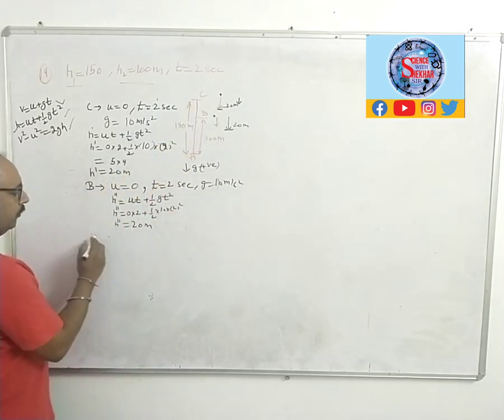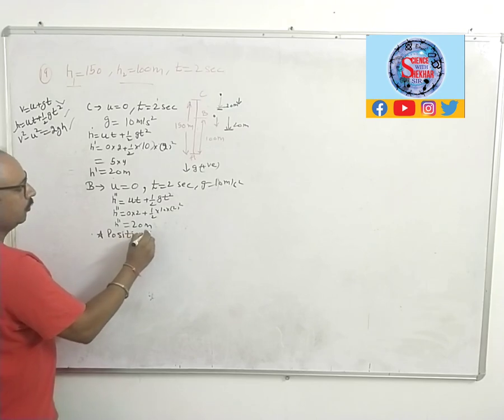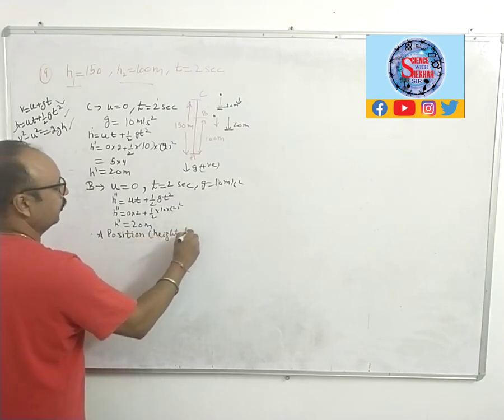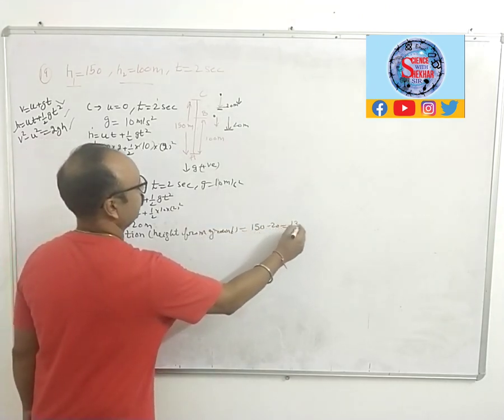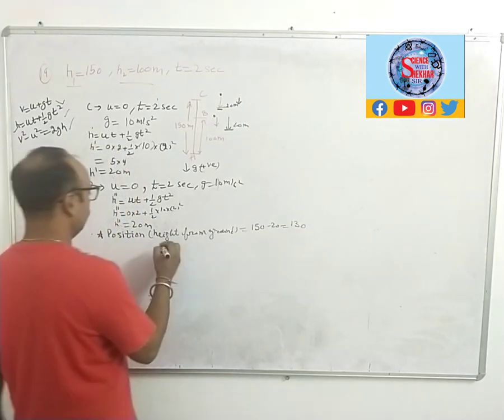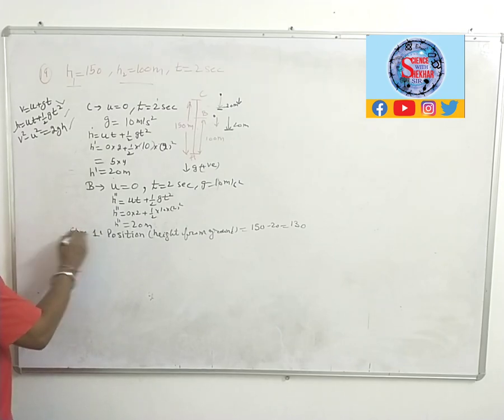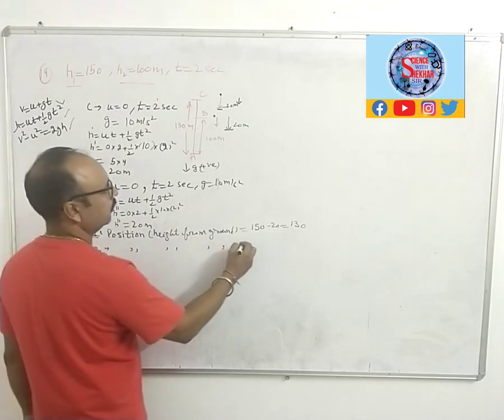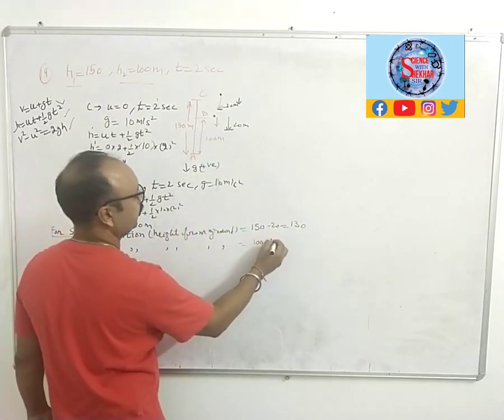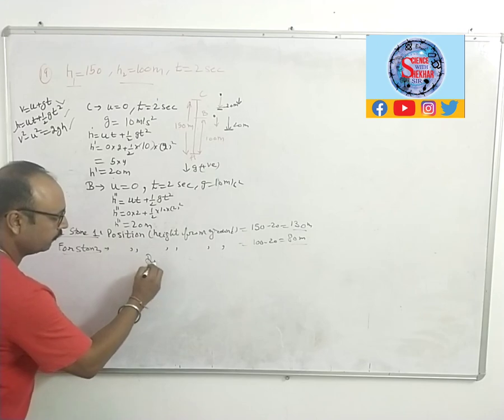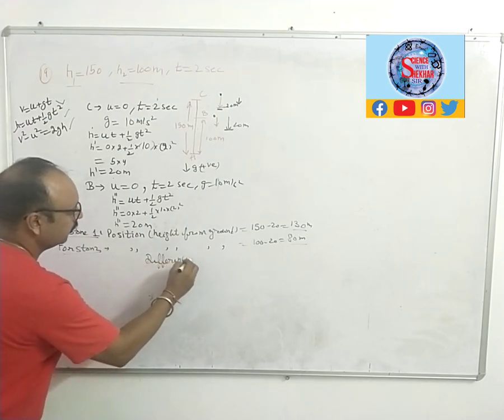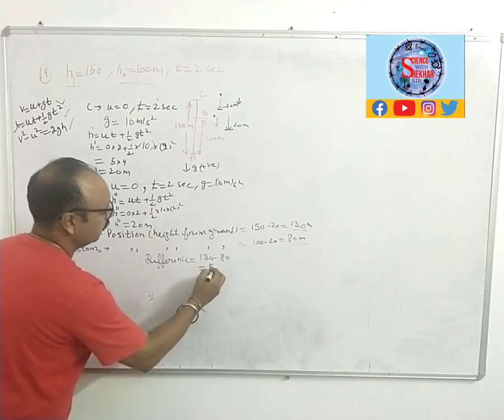Now what we can write: the position of stone 1, the height from ground, is equal to 150 minus 20, that is equal to 130 meters. This is for stone 1. Now again for stone 2, the position: initially it was 100 meters, so 100 minus 20, that is 80 meters. So what is the difference in their heights? 130 minus 80, what will be the answer? 50 meters. So 50 meters is the difference in their heights.